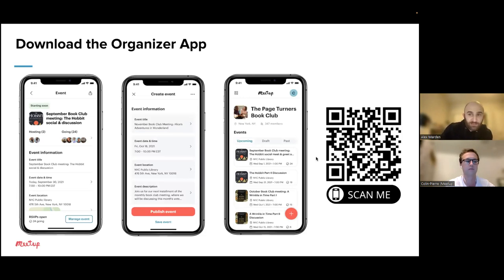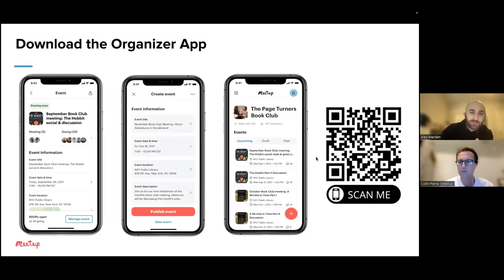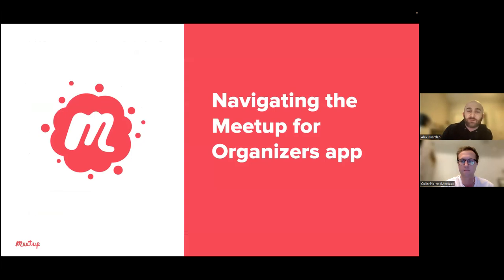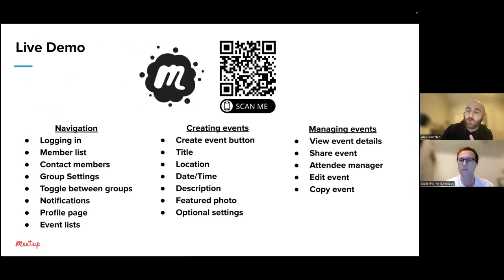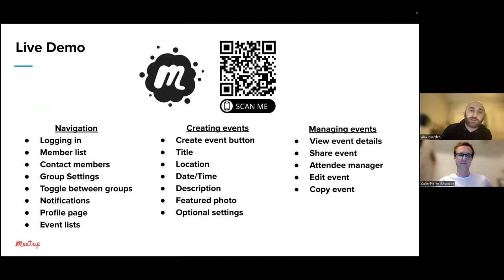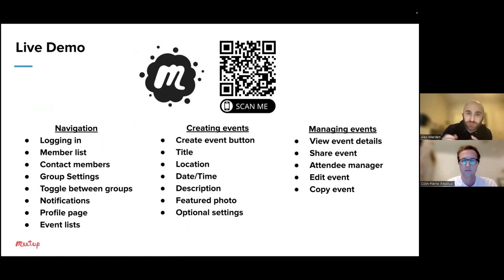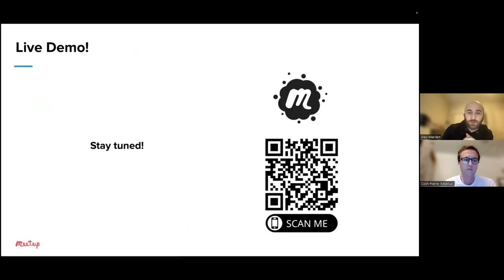If you didn't get a chance to scan this QR code, don't worry. I've got this QR code scattered throughout our presentation today — you'll get lots of chances to download it. So we're almost ready for the demo. Colin is going to take over in just a moment. Here's that QR code again — another chance to make sure you download it before Colin takes over and shows us how to navigate through the app, how to create events, and how to manage events that we've already published. Without further ado, I'm going to hand the screen over to Colin for our live demonstration.